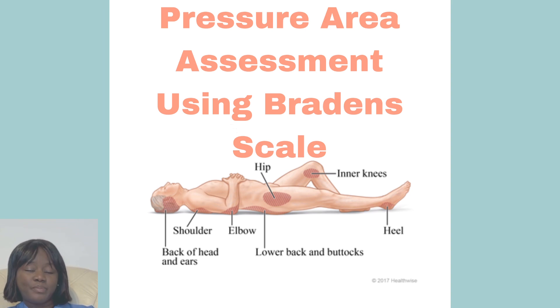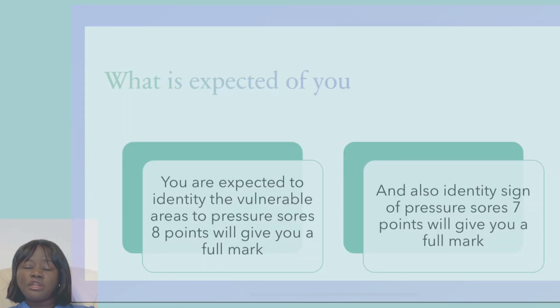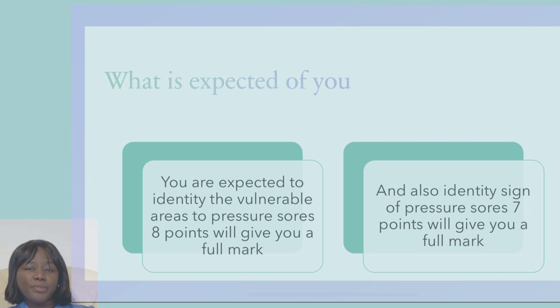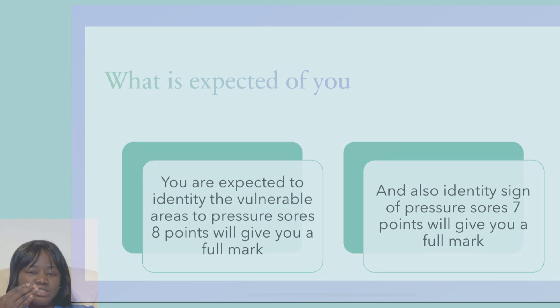You have access to three basic charts. You have access to your question chart and you are expected to mention the pressure areas — the areas that are prone to developing pressure sores in the body. Eight points and you are good to go. You are also expected to mention the signs of pressure developing in the body, and seven points of signs of pressure-related risk developing on the body — seven points and you are good to go.